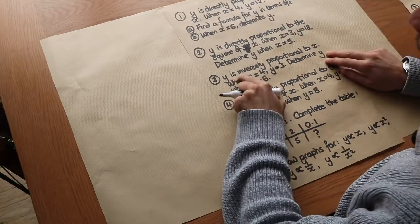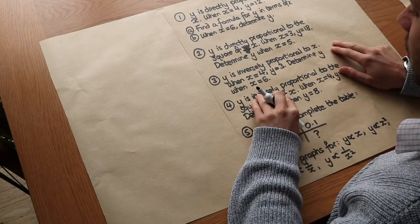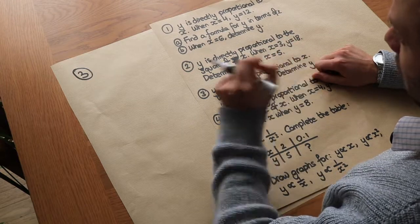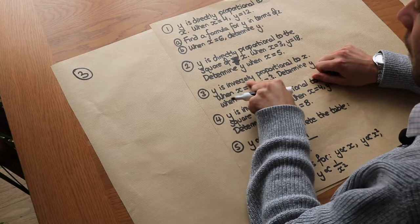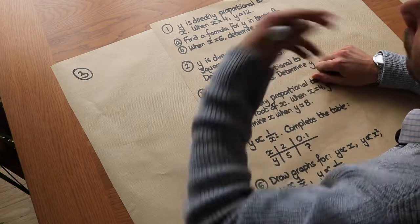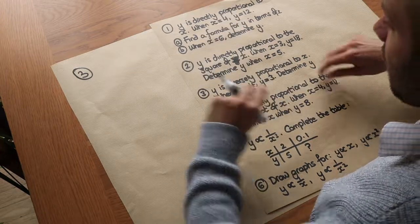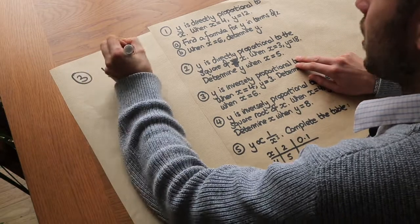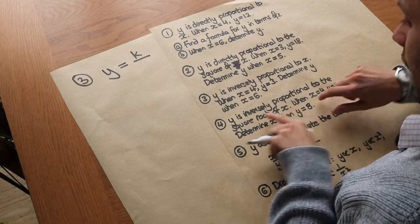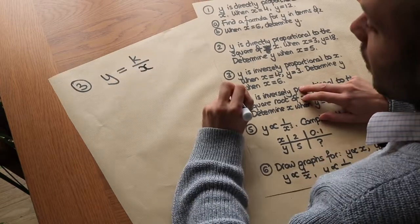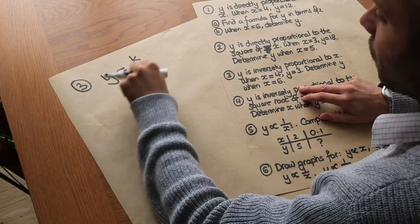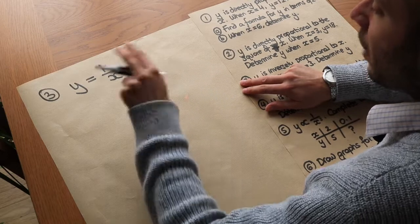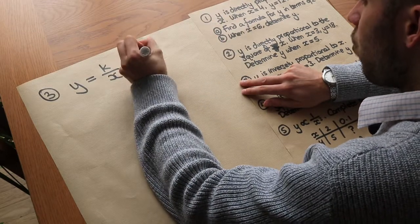Question 3 says y is inversely proportional to x. Previously, 'is directly proportional to' meant equals k times. Similarly, if you see 'is inversely proportional to' you can write equals k divided by. So y is inversely proportional to x becomes y equals k over x. You can see the difference there.